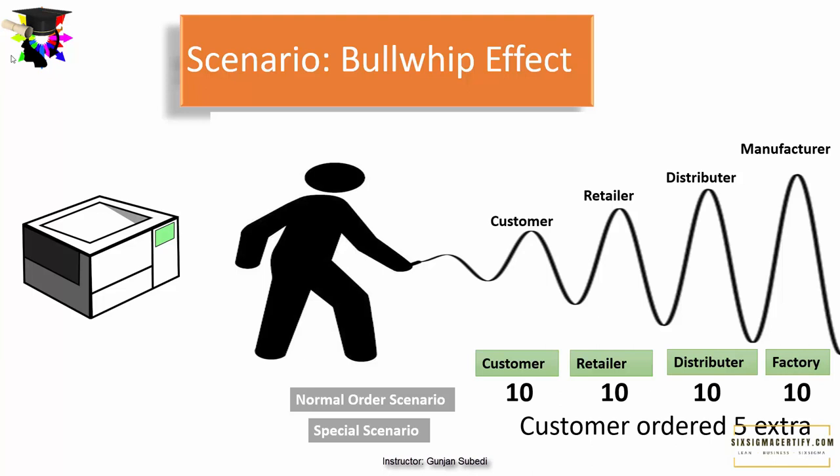So the distributor asked for 16 photocopy machines from the manufacturer. The manufacturer, to meet the distributor's demand, started making 20 photocopy machines. This is just an arbitrary example — there could be different approaches or effects of the bullwhip effect at different levels.